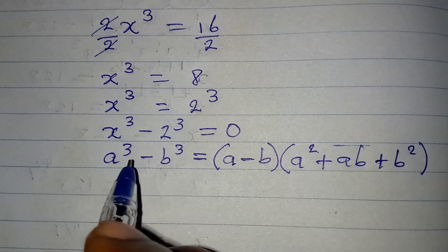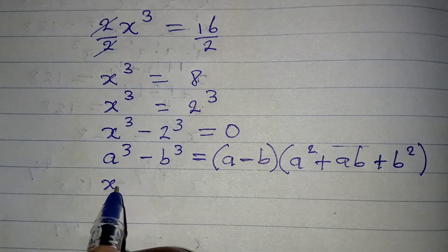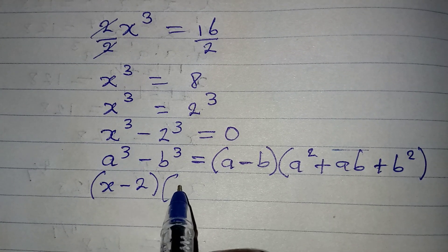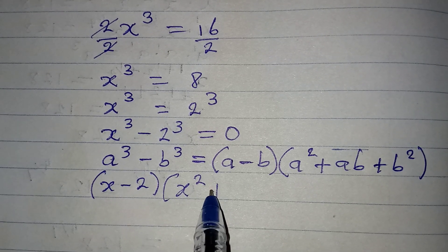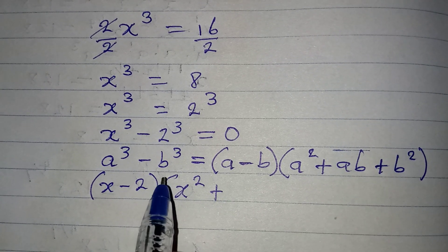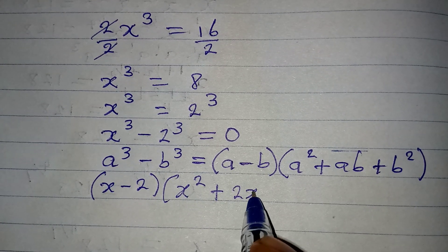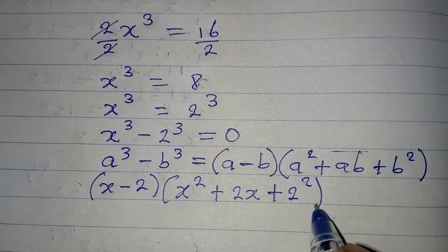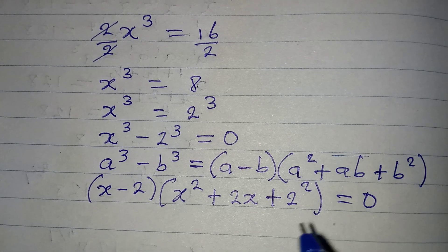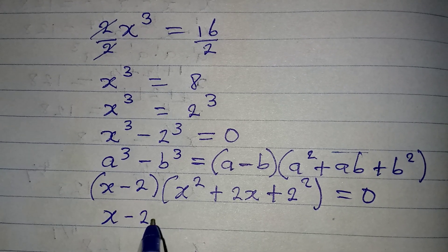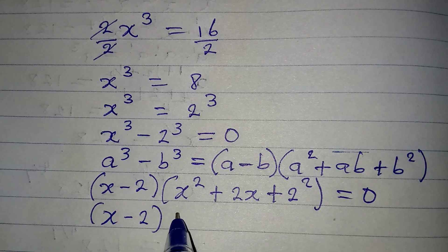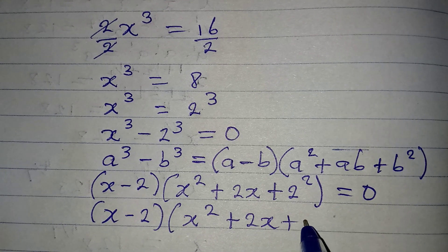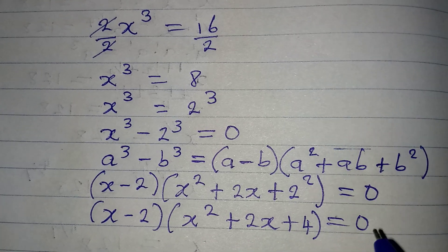I'm going to apply the same principle here. In place of (a minus b) I have (x minus 2). In place of a squared I have x squared, plus ab which becomes 2 times x, which is 2x. Then b squared is 2 squared. This equals 0.